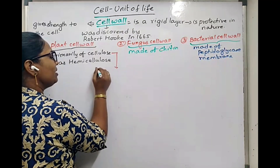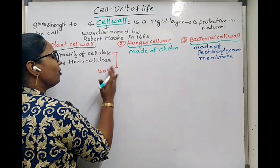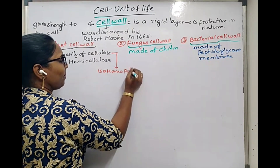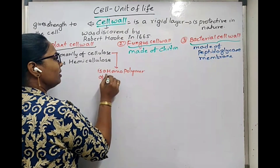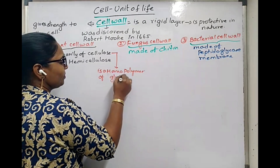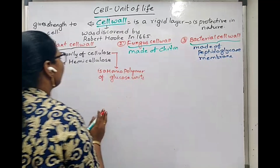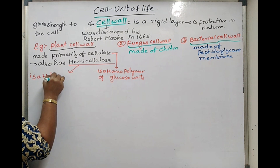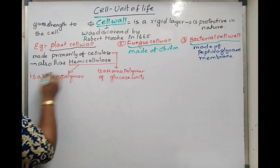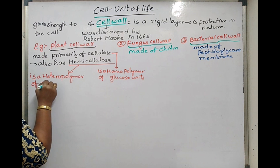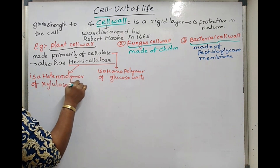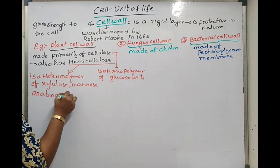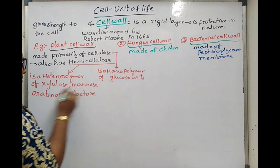Now, cellulose is a polymer — it is a homopolymer of glucose units. Hemicellulose, on the other hand, is a heteropolymer composed of mannose, arabinose, galactose, and glucose.